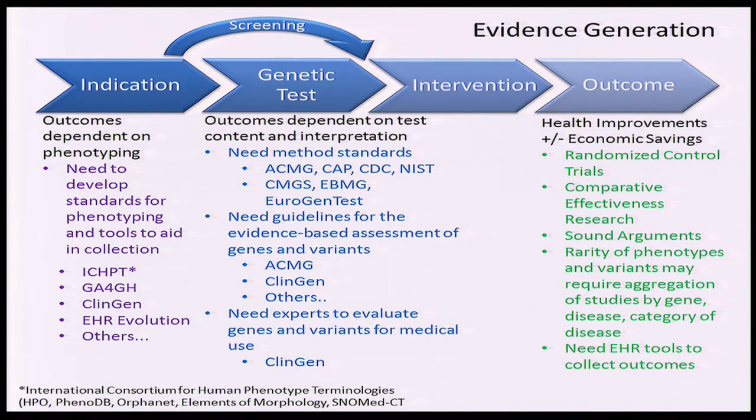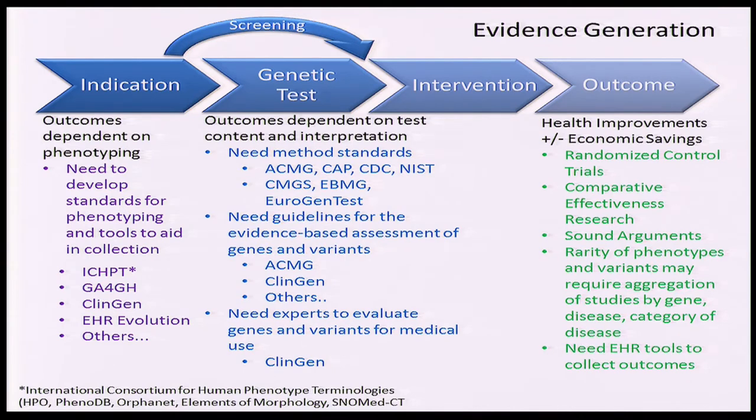That added complexity comes in a few different flavors. One, in some cases the indications can be incredibly rare, and therefore the approaches one takes to generating evidence may need to be different because of the rarity of certain phenotypes. The other arena that makes genomics a lot more complex is the complexity of genetic and genomic tests — given that their content, the methodologies used, and the interpretive process can be highly variable. So comparing scenario to scenario using a different test or interpreting it differently will highly influence your outcomes and ability to generate evidence.